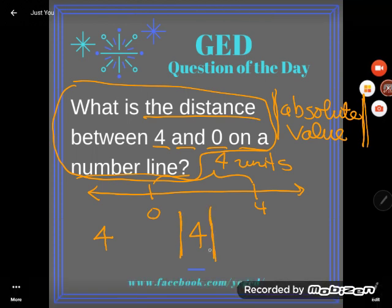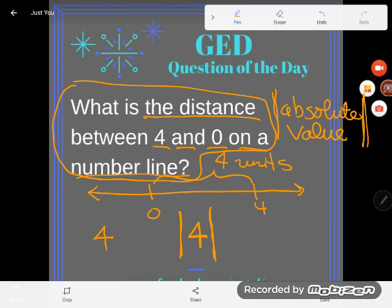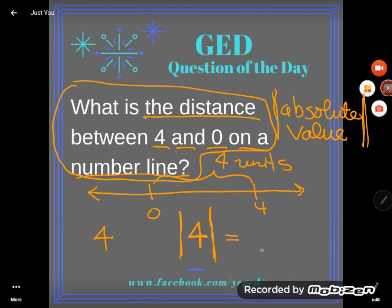If I say the absolute value of 4, I'm saying how far is 4 from 0 on a number line? And of course, as you just told me, it's just 4 units away. And so the answer to that would be 4.